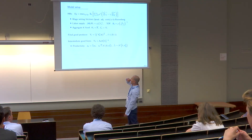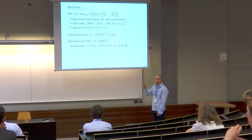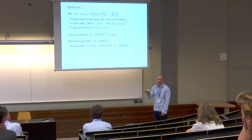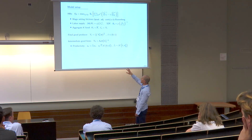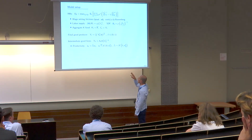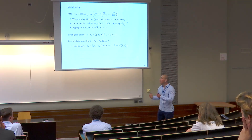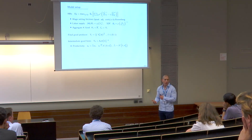I assume the aggregate shock A_t is IID with volatility sigma-squared epsilon; in the quantitative work I'll add persistence, but that won't matter very much. In the cross-section, the beta hats are distributed normally with mean 1 and variance sigma-squared beta hat, which captures how heterogeneous firms are in their betas across the cross-section.